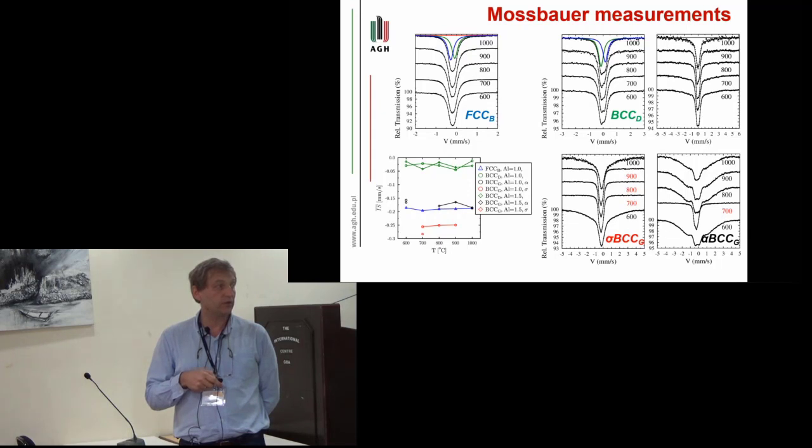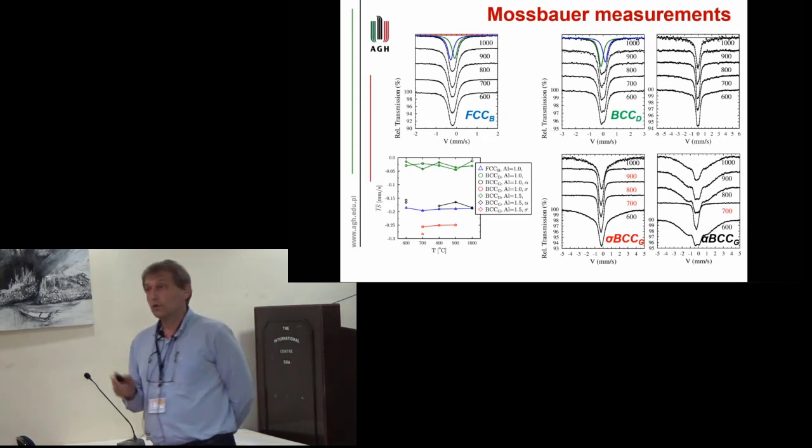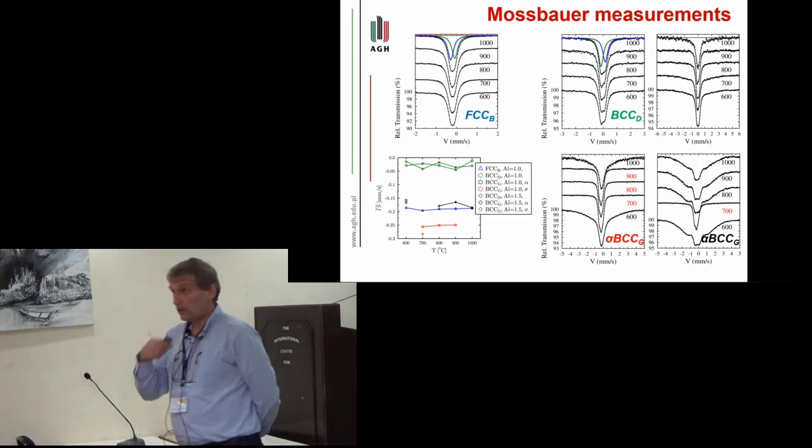The last one, BCC gray phase, transforms in some temperatures into the sigma phase. For example, in these temperatures marked by red, you have completely different spectrum, different parameters corresponding to the sigma phase. This is again magnetically split BCC gray phase.